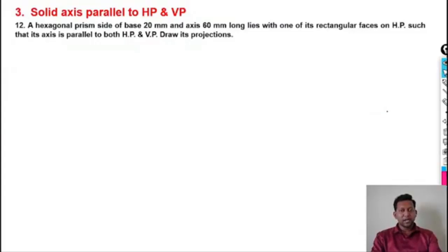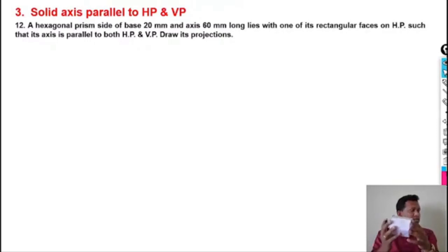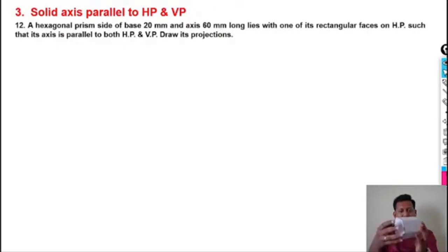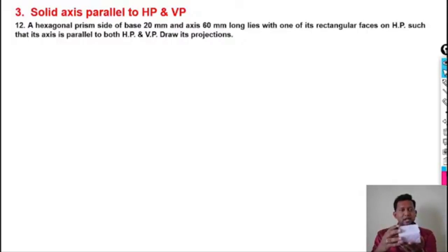The solid here is a hexagonal prism with its axis parallel to both HP and VP. The problem states: a hexagonal prism with side of base 20mm and axis 60mm long lies with one of its rectangular faces on the HP, with its axis parallel to both HP and VP.